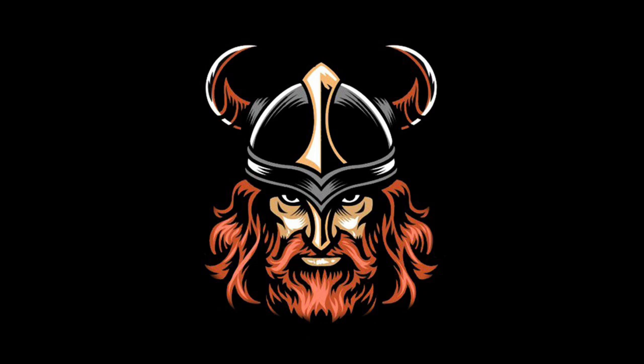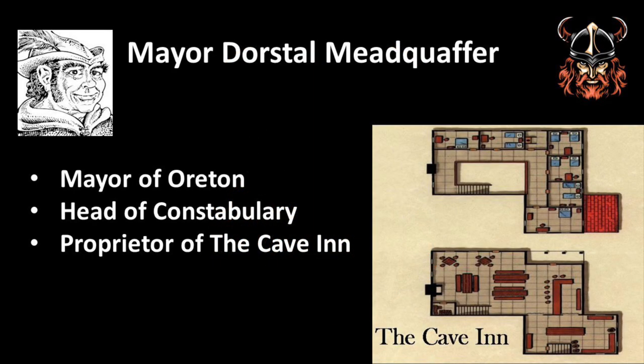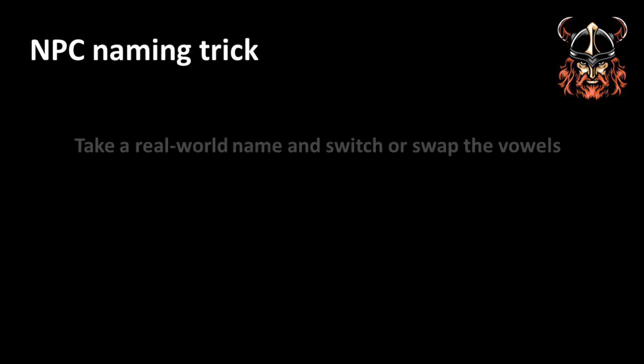Although I could come up with numerous NPCs, I started with only a small number needed to facilitate the first adventure. Specifically, the quest-setter: Dorstal Meadquaffer, who was the owner of the cave-in, but also the de facto mayor of the town and the leader of the local constabulary. I had a rudimentary idea of how the town worked, so if another NPC was needed quickly, I could make that available. And if a name was needed on the spot, I'd use the old trick of using a real-world name but switching out or swapping the vowels and seeing where that went. For instance, Derek could become Derak or Dirak.